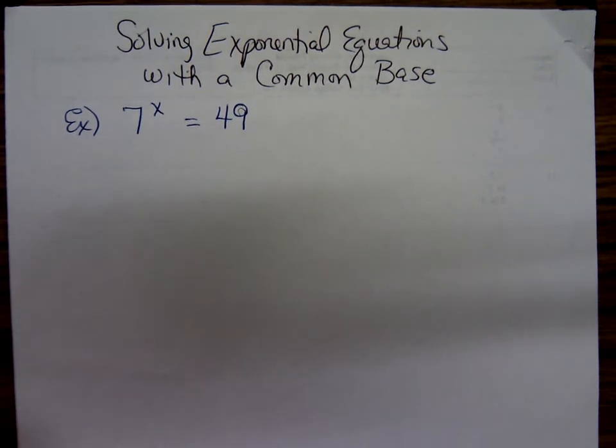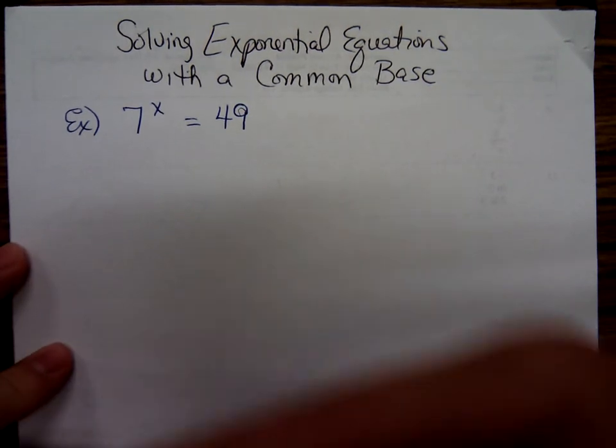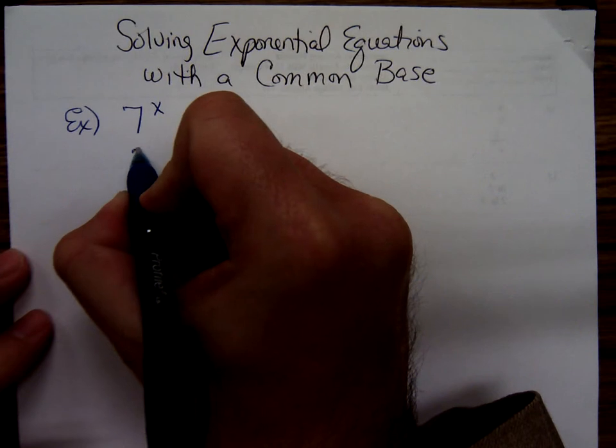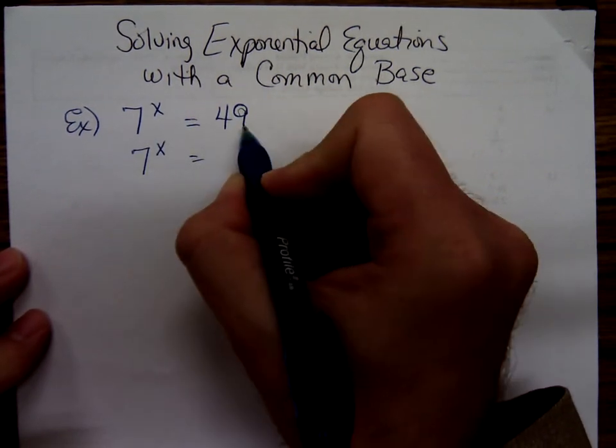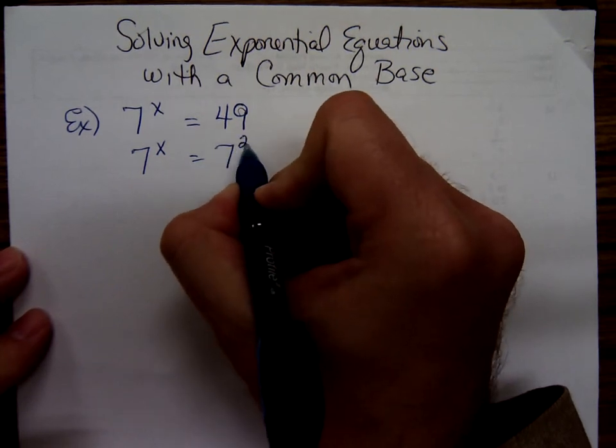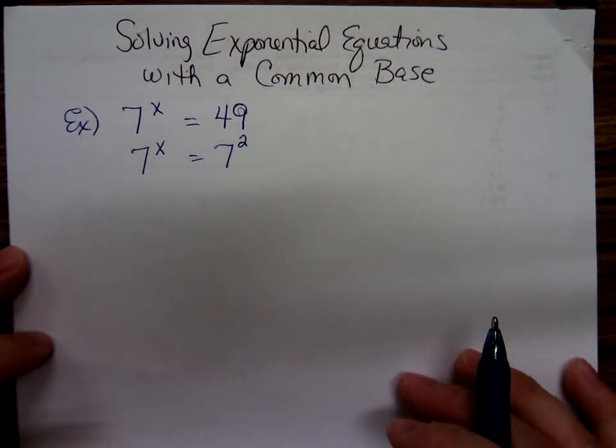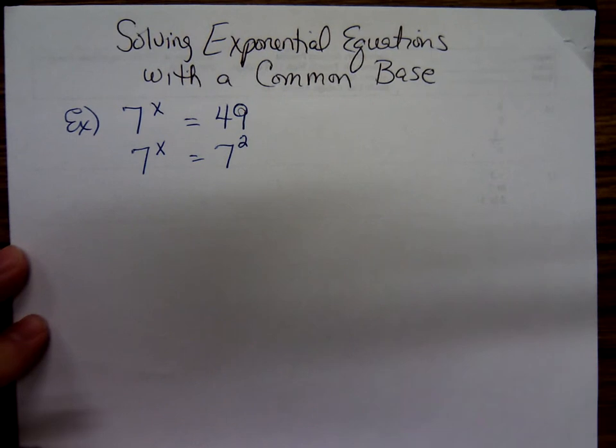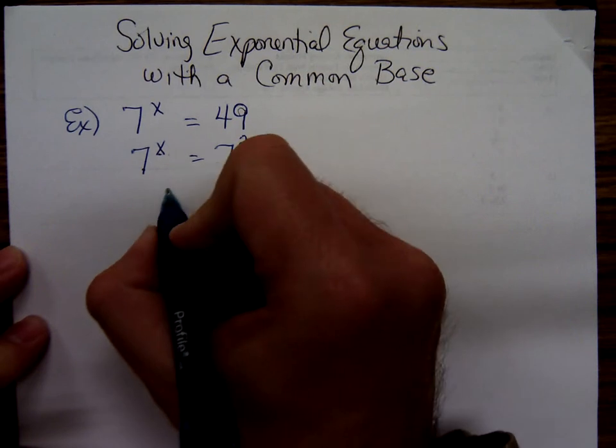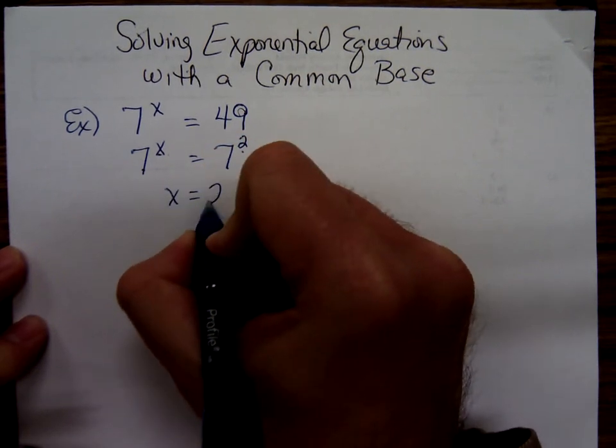How did you decide on 2? Well, what your brain is doing here, and it might be doing it so fast you're not even realizing, it's taking 49 and writing it as 7 squared. And then, if the bases are the same, then the exponents have to be the same. So, x equals 2.